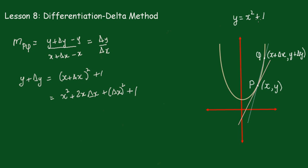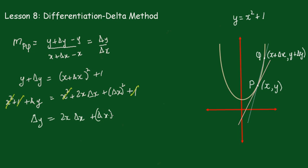Now we know that y = x² + 1, so we replace y with x² + 1. So we have x² + 1 + Δy on the left. The x² terms cancel, the 1s cancel, and we get that Δy = 2x·Δx + Δx².